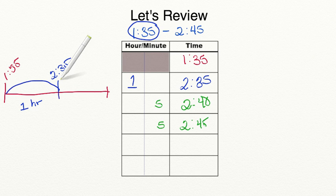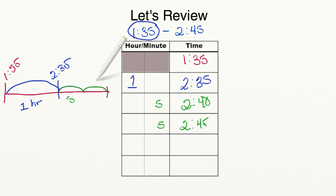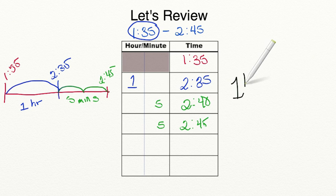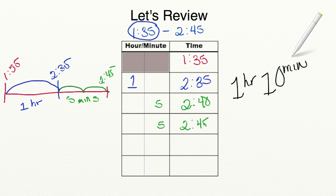On the number line, 2:35 to 2:40 is 5 minutes, and 2:40 to 2:45 — our end time — is another 5 minutes. Make sure to write your units so you don't confuse minutes and hours. Our last step is to add these together: we have 1 hour and 10 minutes. The number line shows the same result: 1 hour, plus 5 minutes plus 5 minutes equals 10 minutes.